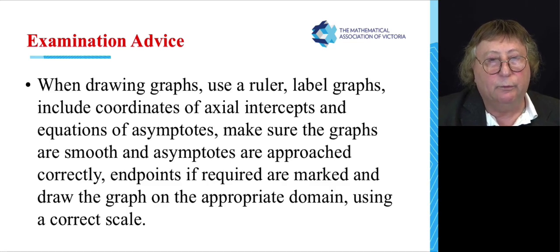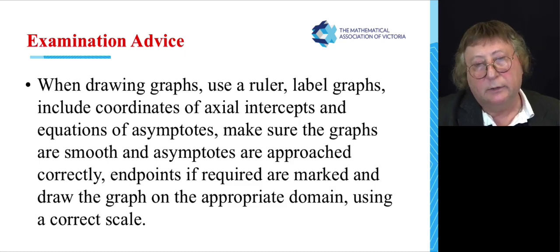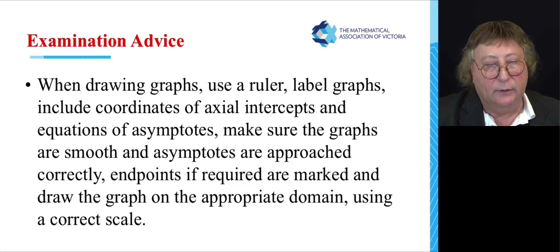Overall, when drawing a graph, make sure you perhaps use a ruler if you have to draw some asymptotes and they're straight lines. Label the graphs. Label the graphs. Make sure you label the graphs. Graphs will often say label the coordinates. Make sure you have them in round brackets and xy. Make sure you include the equations of the asymptotes. For example, you write x equals minus 2, VA, vertical asymptote - shorthand, examiners are happy with some abbreviations. Make sure your graphs are smooth and asymptotes are approached. If you're drawing a graph on a restricted domain function, make sure you include the endpoints if required and only draw the graph in the restricted domain. Don't draw it past the restricted domain or, for example, negative values of t if it's a time graph. Make sure you use an appropriate scale and an appropriate domain is shown.